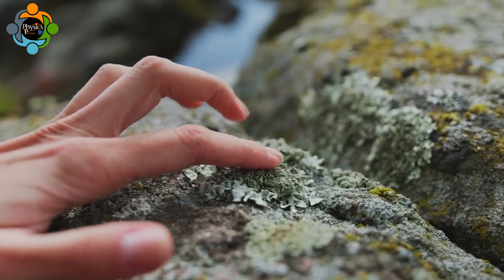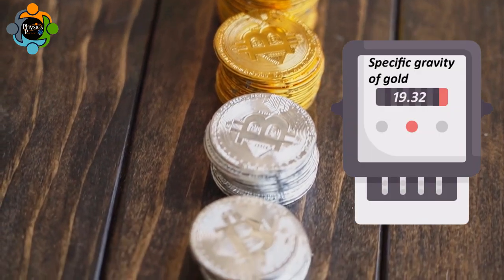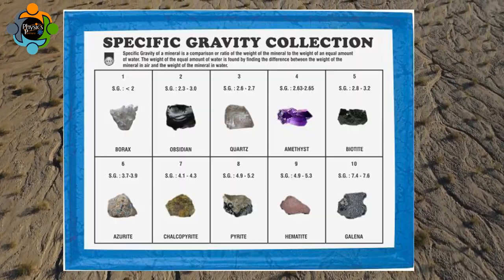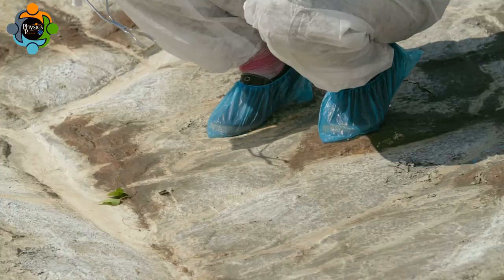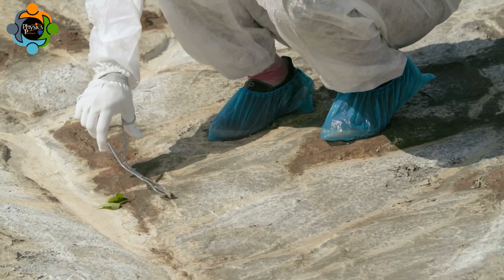For instance, gold has a specific gravity of 19.32, which is much higher than that of most other minerals present in the Earth's crust. This property allows geologists to identify gold deposits and potential mining sites.